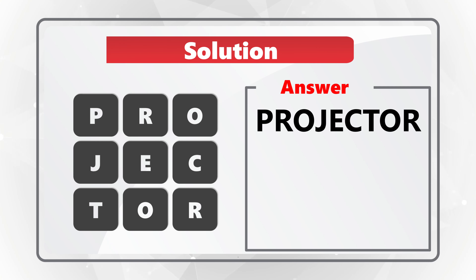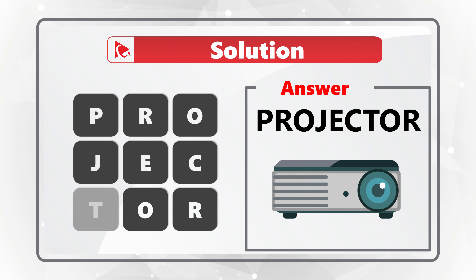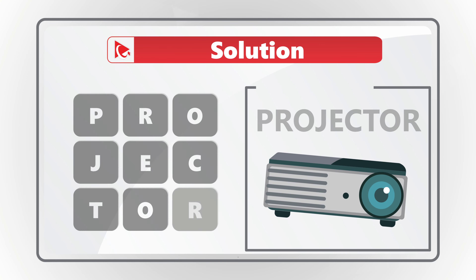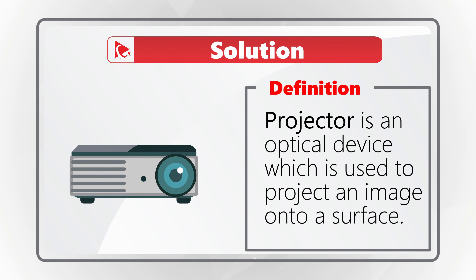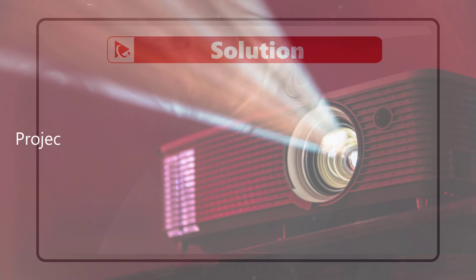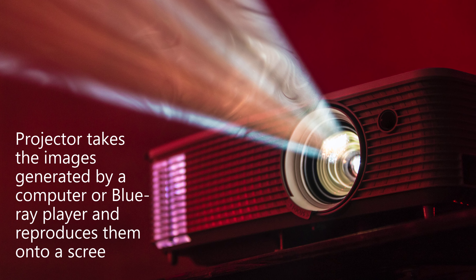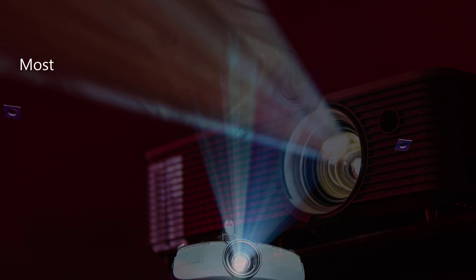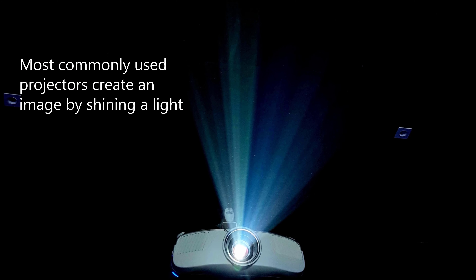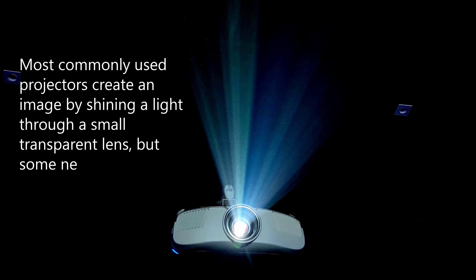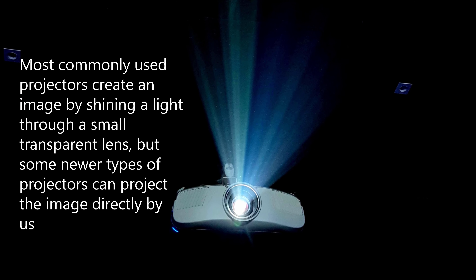Let me spell it for you: P-R-O-J-E-C-T-O-R. The definition is: a projector is an optical device which is used to project an image onto a surface. Projectors typically take images generated by a computer or Blu-ray player and reproduce them on a screen. Most commonly used projectors create an image by shining a light through small transparent lenses, but some new types can project an image directly using lasers.